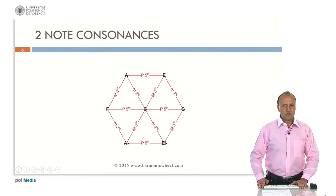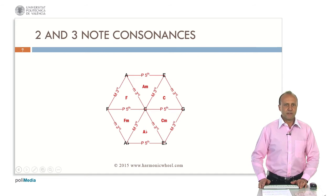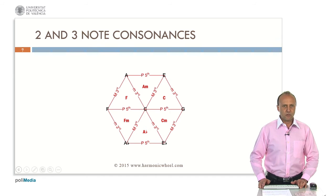The next step is to represent the three-note consonants, that is, major and minor chords. In this graph, we can see six triangles. Each of them has three nodes at its vertices, which form a consonant chord. Those chords are represented here. Note C can belong to a major or minor chord as the root, the third or the fifth. So, we have six possibilities, which are the six chords represented here.